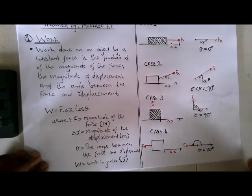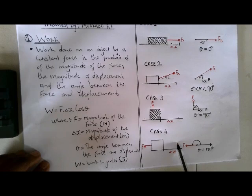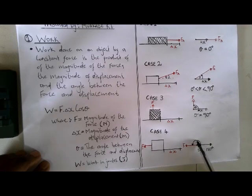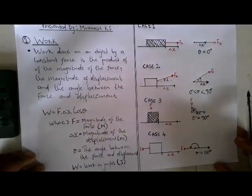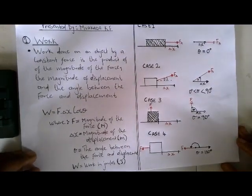Case four: the object is moving in one direction but there is a force applied in the opposite direction. For example, the displacement of the block is towards the right but the force is applied to the left — in the opposite direction. So the angle between the displacement and the force is going to be 180 degrees. Now let us do some examples.